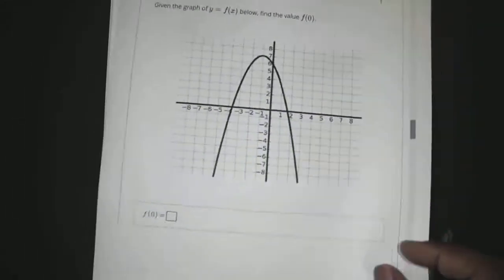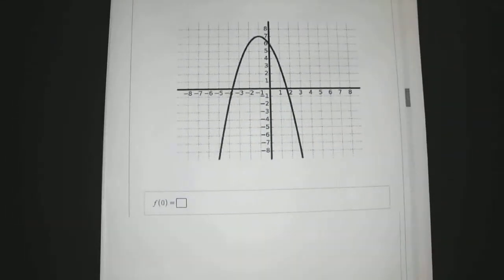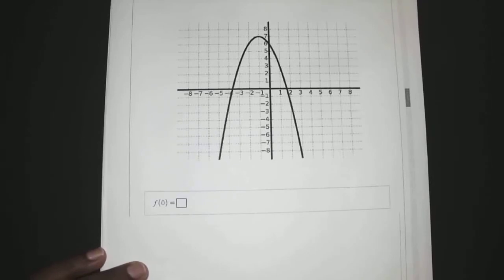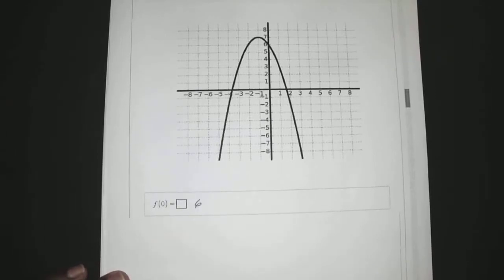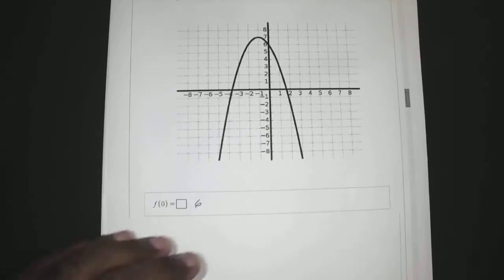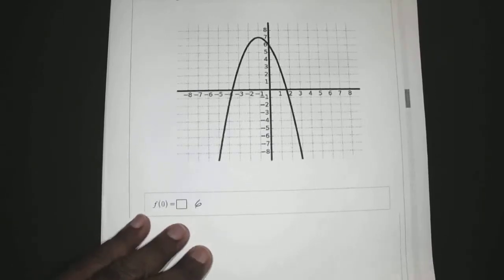So then here, when they give you f of 0, they're basically asking where is y equal to 0? The answer is 6. When x is equal to 0, y equals 6.